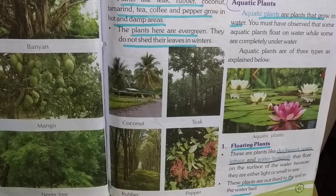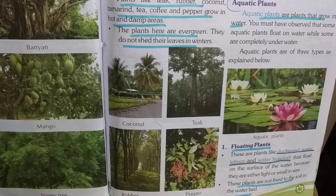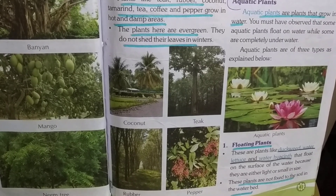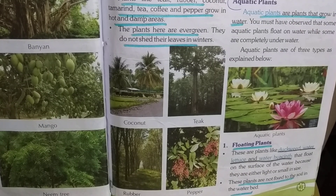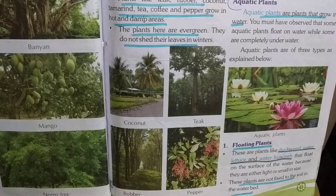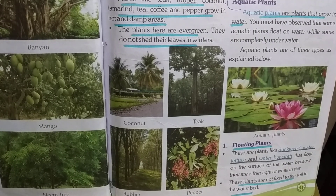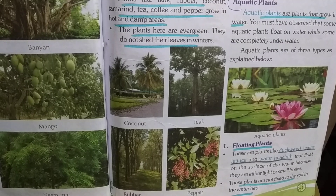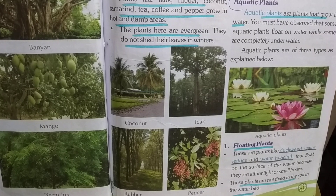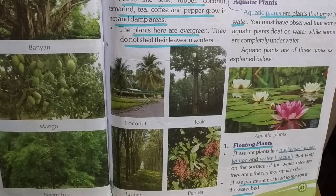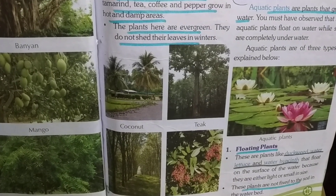Aquatic plants are plants that grow in water. You must have seen some aquatic plants float on water, while some are completely underwater. Aquatic plants are of 3 types.